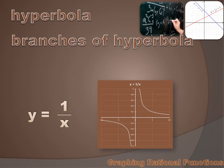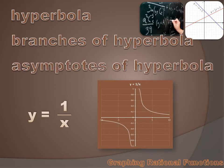X is never equal to zero. Y is never equal to zero in the parent function. And those lines — in this case, the axes of the graph — that the curve approaches but never touches, are known as the asymptotes of the hyperbola.